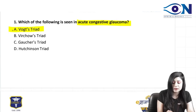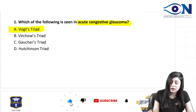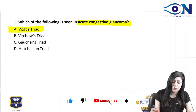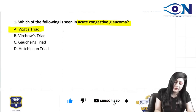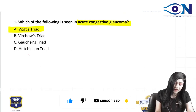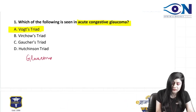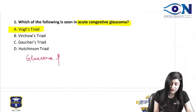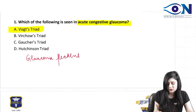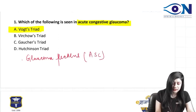It is actually the Vox triad. And what do you find in the Vox triad? We have the glaucoma flecans, which is the anterior subcapsular cataract.